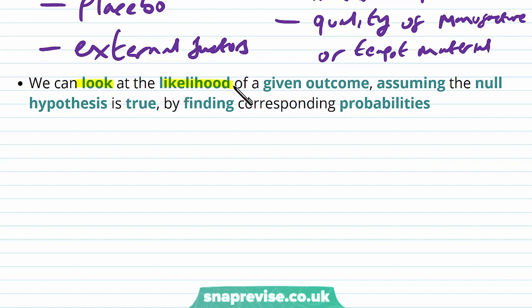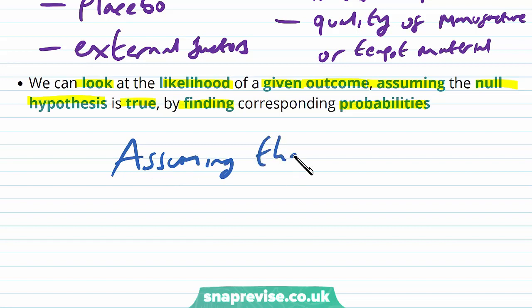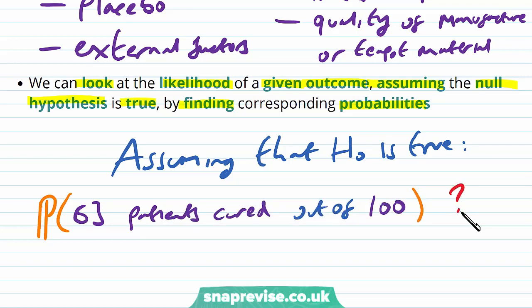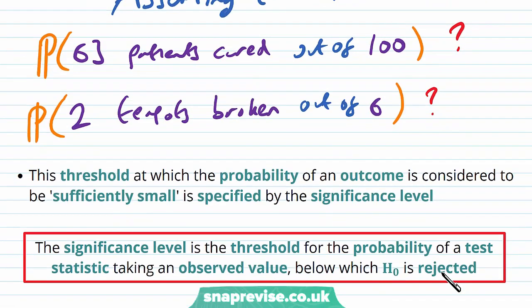We can look at the likelihood of a given outcome assuming that the null hypothesis is true by finding corresponding probabilities. We take the assumption that H0 is true, and then we examine — for example — the probability that 63 patients are cured out of 100 on the new drug, or the probability that two teapots are broken out of six. This threshold at which the probability of an outcome is considered to be sufficiently small is specified by the significance level.